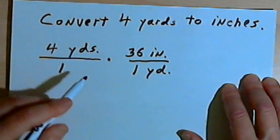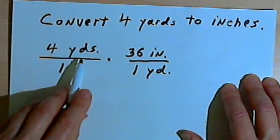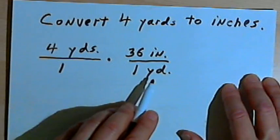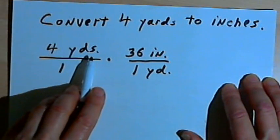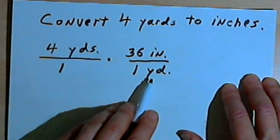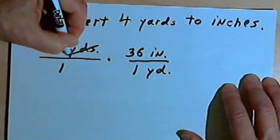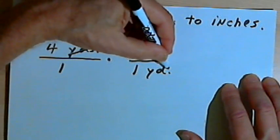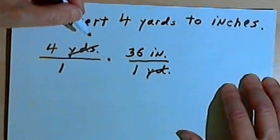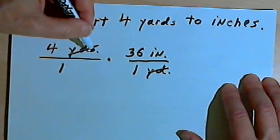Now when I do this, the next step I'm going to cancel out anything I have in common in the numerator and the denominator. And both of them have yards. So I'll cross out the yards from the numerator, cross it out from the denominator, and now my denominators are just 1s.